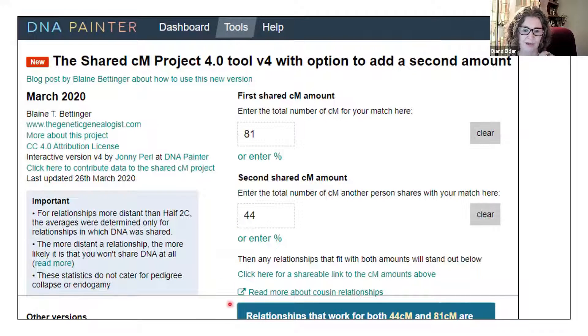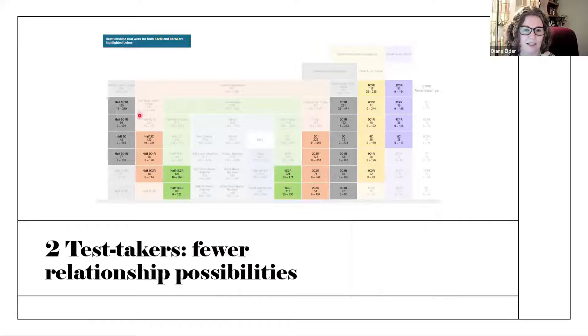And so then we get relationships that work for both 44 centimorgans and 81 centimorgans. And when we look down at the different possibles, then we can see that there are a few things that have been eliminated. So this still looks like a lot of possibilities. So what do we do next?